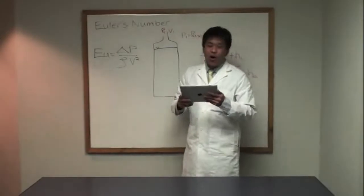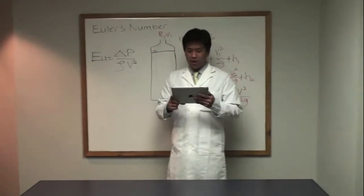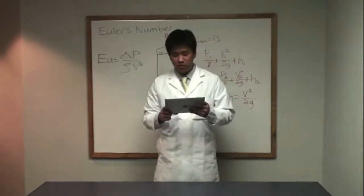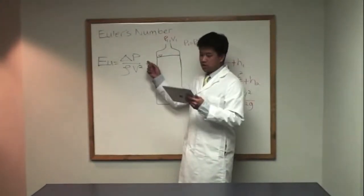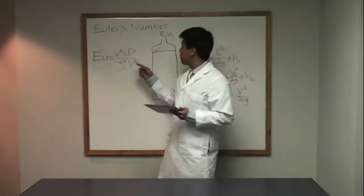Today we're going to be talking about Euler's number. Euler's number is a dimensionless number used in fluid flow calculation, particularly to characterize losses in the flow.